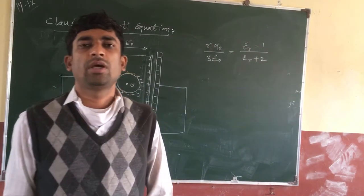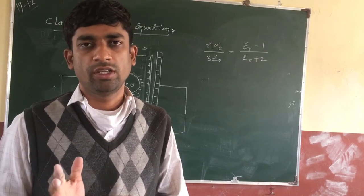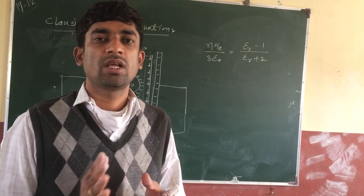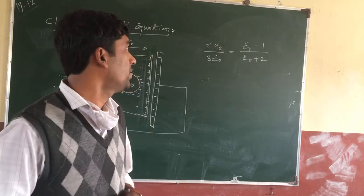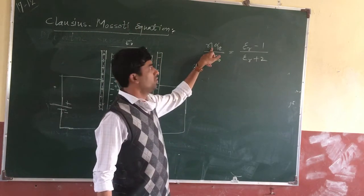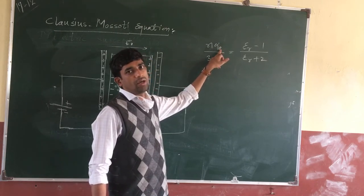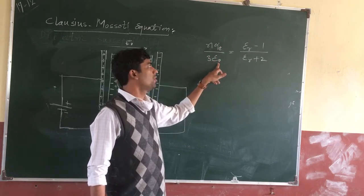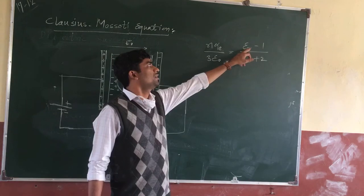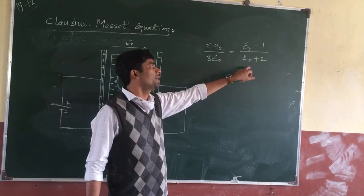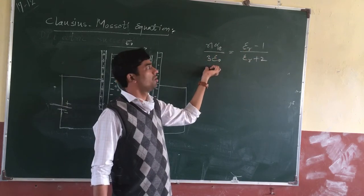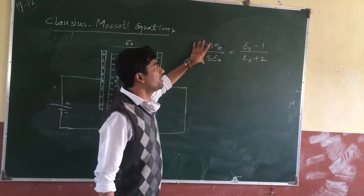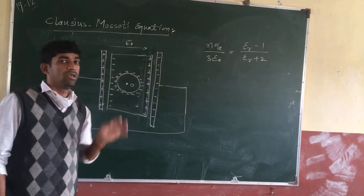Good afternoon students. Today we are going to learn one of the most important relations in dielectrics — the Clausius-Mossotti equation. This equation is given as: N alpha_E over 3 epsilon_naught equals (epsilon_r minus 1) divided by (epsilon_r plus 2). Here N is the number of dipoles per unit volume, alpha_E is the polarizability constant, epsilon_naught is the permittivity of free space, and epsilon_r is the relative permittivity.